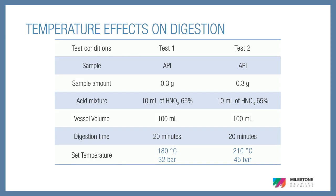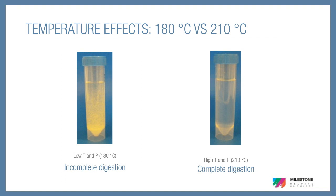It's important to understand that temperature is a factor that drives digestion quality, and pressure is just a byproduct. To illustrate the importance of temperature on digestion, we digested two API samples, keeping all variables the same, except temperature. In test one, we digested at 180°C, and in test two, 30 degrees hotter, at 210°C. If we look at both samples, you will see that the one on the left, digested at 180°C, is yellow, and the one on the right, digested at 210°C, is clear. The yellow color is indicative of residual carbon content, which is essentially undigested organic material. This can cause many issues on your analytical instrument, such as carbon buildup on the interface cone or polyatomic interferences. Just by going 30 degrees hotter, we have a clear solution, commonly referred to as visual clarity, which is the target of any digestion.